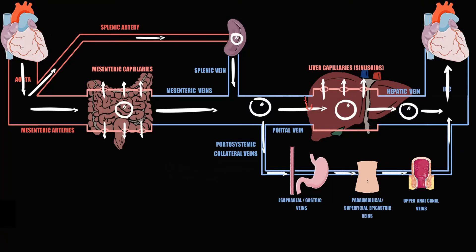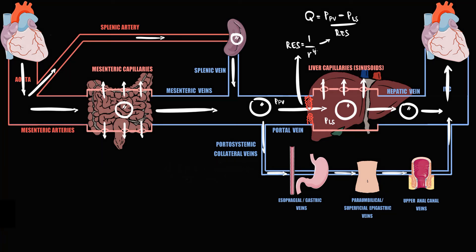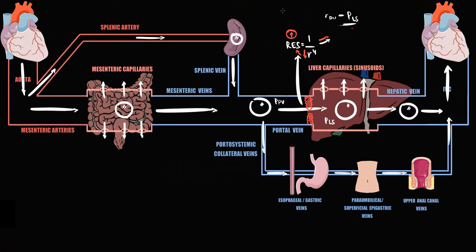Suppose thrombosis of the portal vein occurs. The flow through the portal vein to liver sinusoids decreases, because flow equals the pressure inside the portal vein minus pressure inside the liver sinusoids, divided by resistance — and resistance is inversely proportional to the fourth power of the radius. If thrombosis occurs, the radius inside the portal vein decreases; with decreasing radius, resistance increases and flow through this area decreases. So the inflow of blood to the portal vein remains the same while outflow decreases due to thrombosis, resulting in accumulation of fluid proximal to the thrombosis.